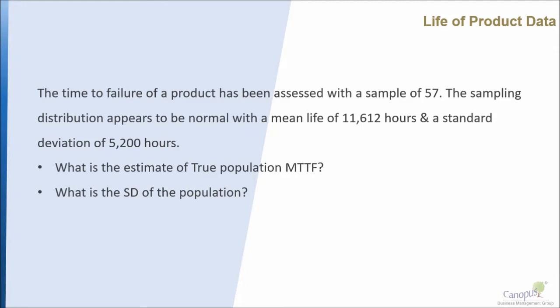We find out that the sampling distribution appears to be normal. We have collected data in a manner exactly as described in our central limit theorem — 57 samples collected over a few weeks. When I put all that together, I have got a mean of 11,612 hours for the sample, and the standard deviation of the sample is 5,200 hours.